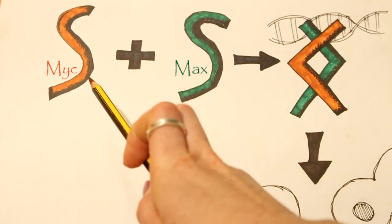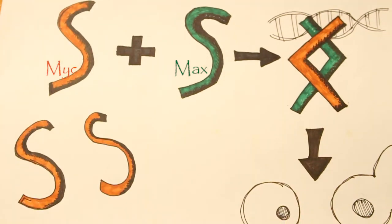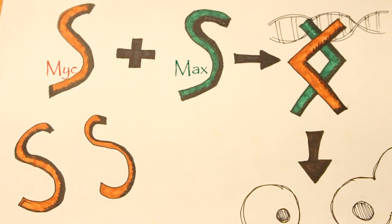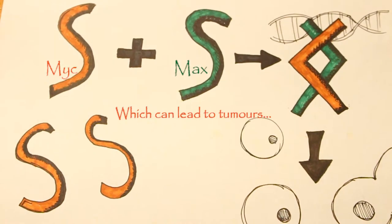In a lot of human cancers, there are many more myc molecules than normal. This means more myc molecules bind to your DNA, causing your cells to grow and divide at a faster and faster rate.